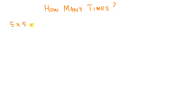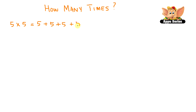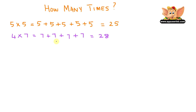Now let's look at some multiplication problems and make them addition problems. We have 5 times 5, so that would be 5 plus 5 plus 5 plus 5 plus 5 equals 25. Here's another one: 4 times 7, that is 7 plus 7 plus 7 plus 7 equals 28. Another one is 4 times 6, which is 6 plus 6 plus 6 plus 6 equals 24.